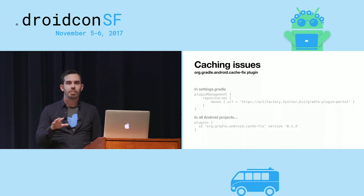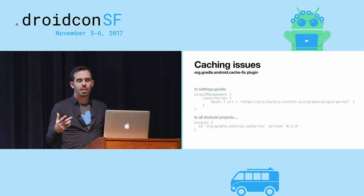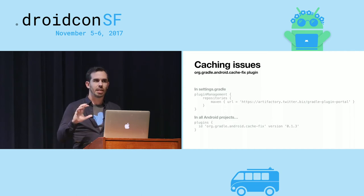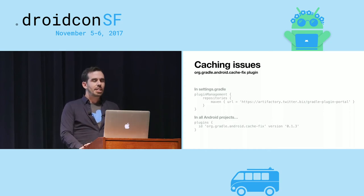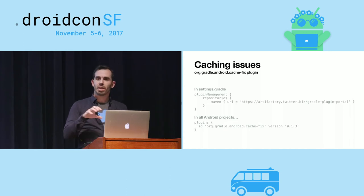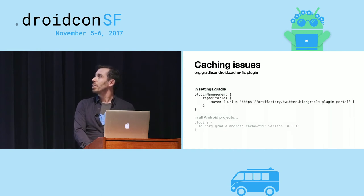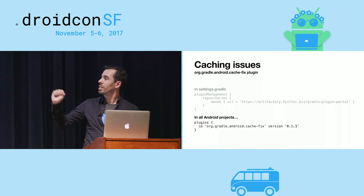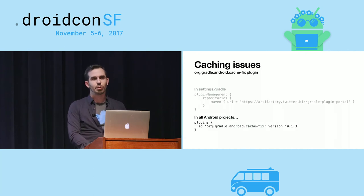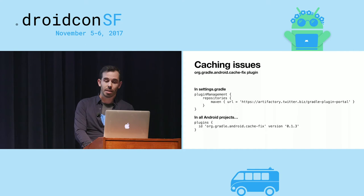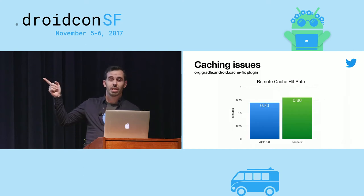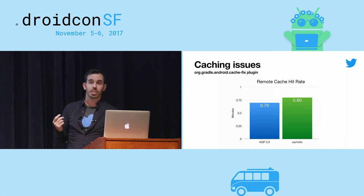Hans mentioned there are a number of bugs in AGP 3.0 that are preventing remote caching from working correctly. If you were to fix all of those bugs, you get a significant improvement. Gradle has collected fixes for all of them for when 3.1 ships. There's a plugin you can apply to your Android projects now that fixes all those bugs. In our particular case, just applying that increased our remote cache hit rate from 70% to 80%.